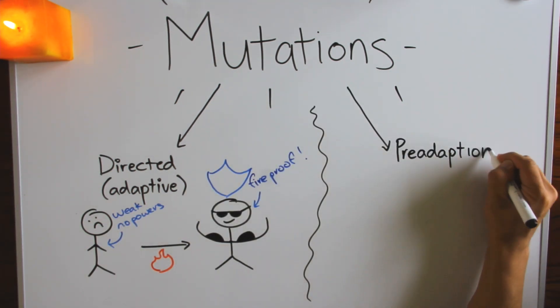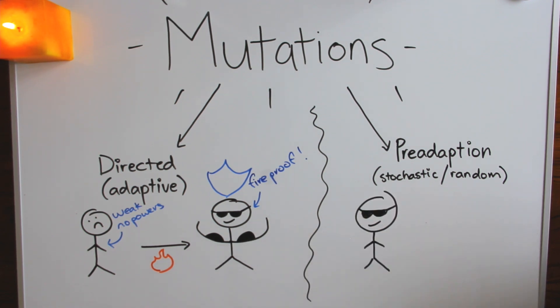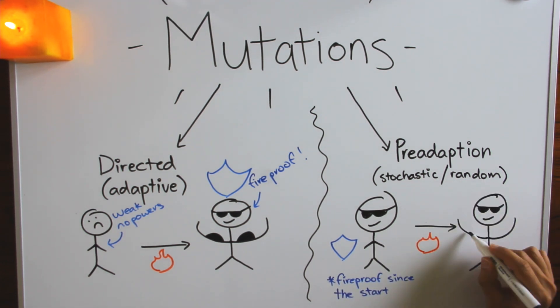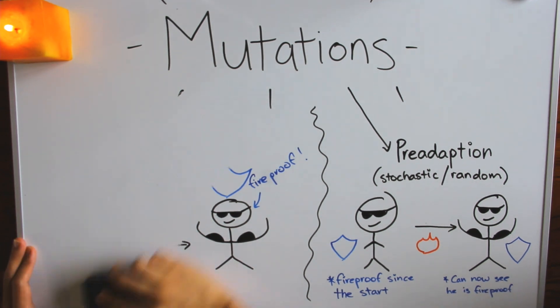Pre-adaptation, on the other hand, is the idea that organisms randomly acquire mutations. That is, mutations are stochastic or random, but you don't notice them unless the environment changes. In other words, I'm already fireproof, but you can't tell unless you set me on fire.